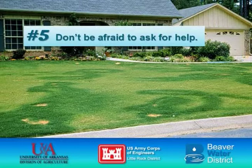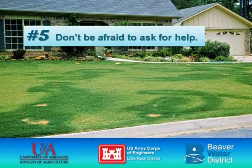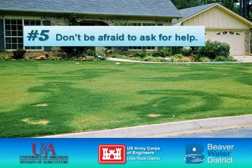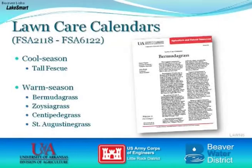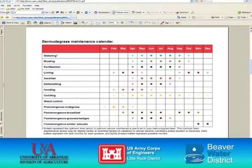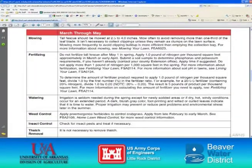The last tip is not to be afraid to ask for help. We have a lot of useful information to help you maintain your lawn. One useful tool is the Lawn Care Calendars — a series of publications written specifically for different grass species that provide guidance on lawn care. These calendars include a chart listing all months of the year and all maintenance practices, plus a seasonal narrative providing specific guidance on mowing, fertilization, watering, pest control, and more.